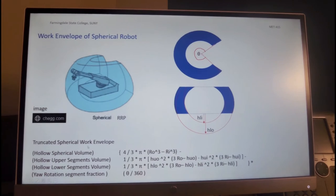We can calculate the work envelope using analytical formulations of these geometries. So 4 third times pi times the outer radius cubed minus the inner radius cubed will provide us the volume of the sphere less the internal sphere. So that's basically the segment in between the sphere. But from that, we have to deduct the truncated hemisphere, which is given by this equation. 1 third pi times h upper squared